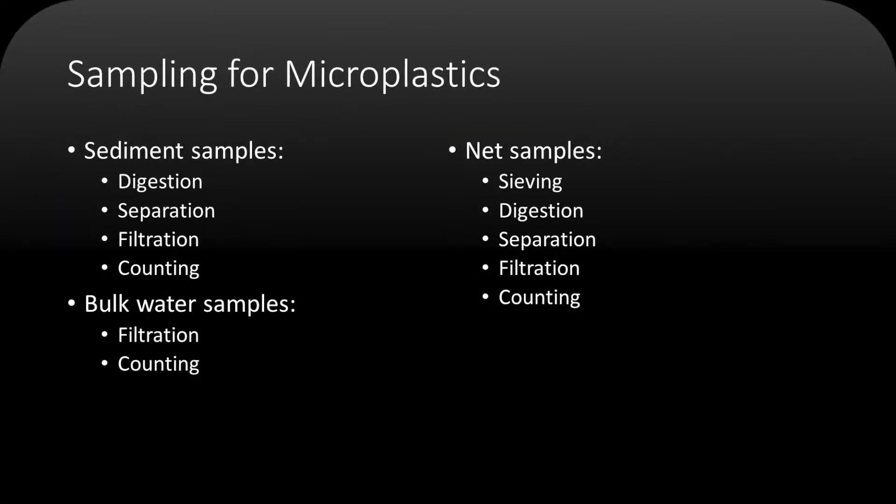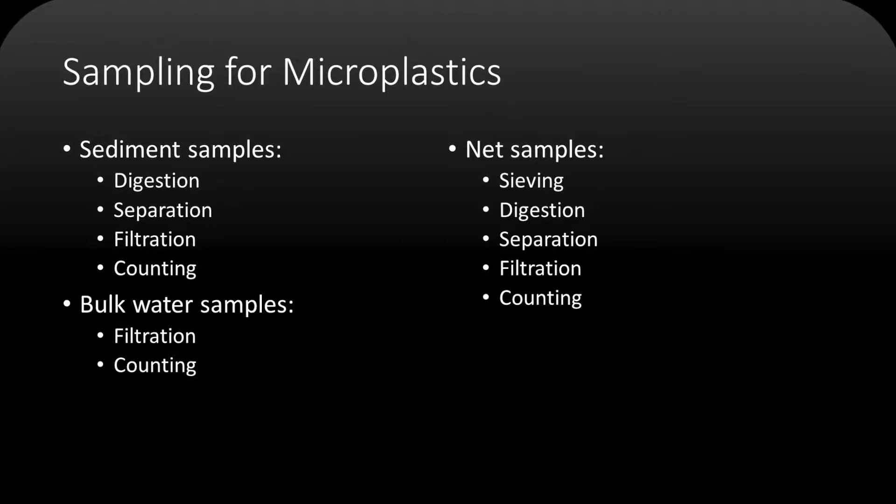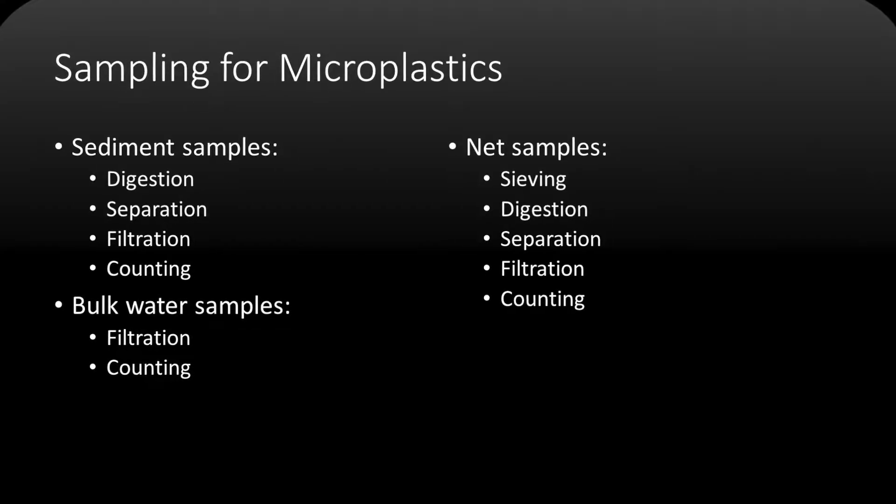There are three types of microplastic samples: sediment samples, net samples, and bulk water samples. Each of these sampling methods has a slightly different processing method that goes along with it.